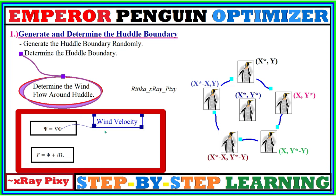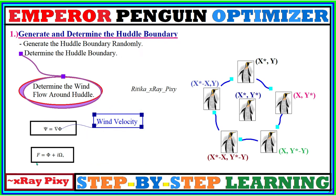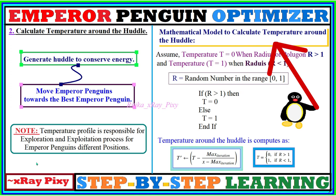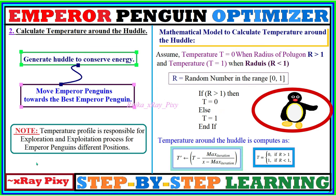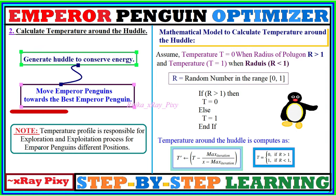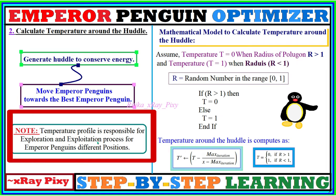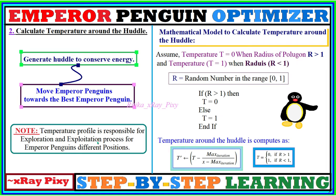Different complex variables are used to determine the randomly generated boundary. For example, one variable represents the wind velocity. After that, we calculate the wind force around the huddle, and then we calculate the temperature profile around the huddle. Since the huddle is generated to conserve energy and maximize temperature so penguins can survive the tough Antarctic winter, we move the emperor penguins toward the warmest emperor penguins. In this algorithm, the temperature profile is responsible for two important phases: exploration and exploitation.